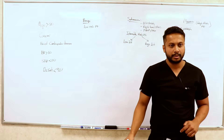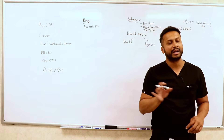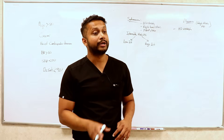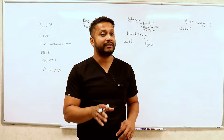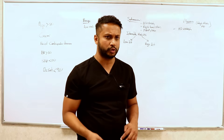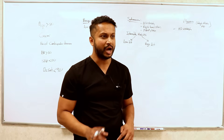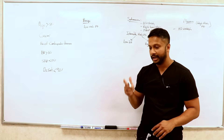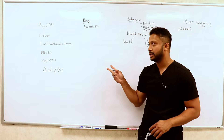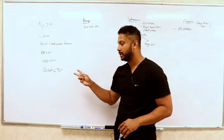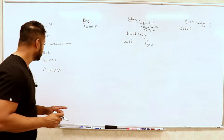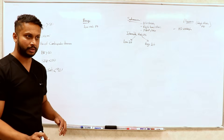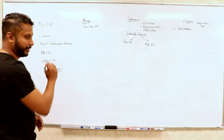Now, when it comes to pulmonary embolism, there's a score you have to calculate: the PESI score — Pulmonary Embolism Severity Index. There's a longer version, but you now have a simplified PESI score which includes: age more than 80, history of cancer, history of cardiopulmonary disease, heart rate greater than 110, systolic blood pressure less than 100, or pulse ox saturation less than 90%. That gives you six possible points.